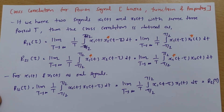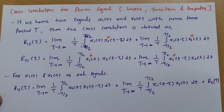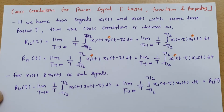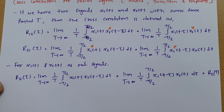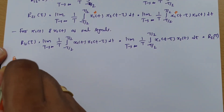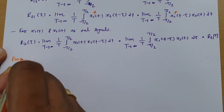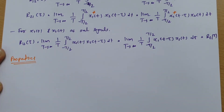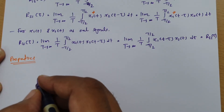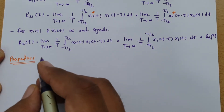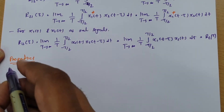Now let us discuss the properties of cross correlation for power signal. These properties are essential for solving examples. You will find that the properties of cross correlation for power signal are almost identical to the properties of cross correlation for energy signal.